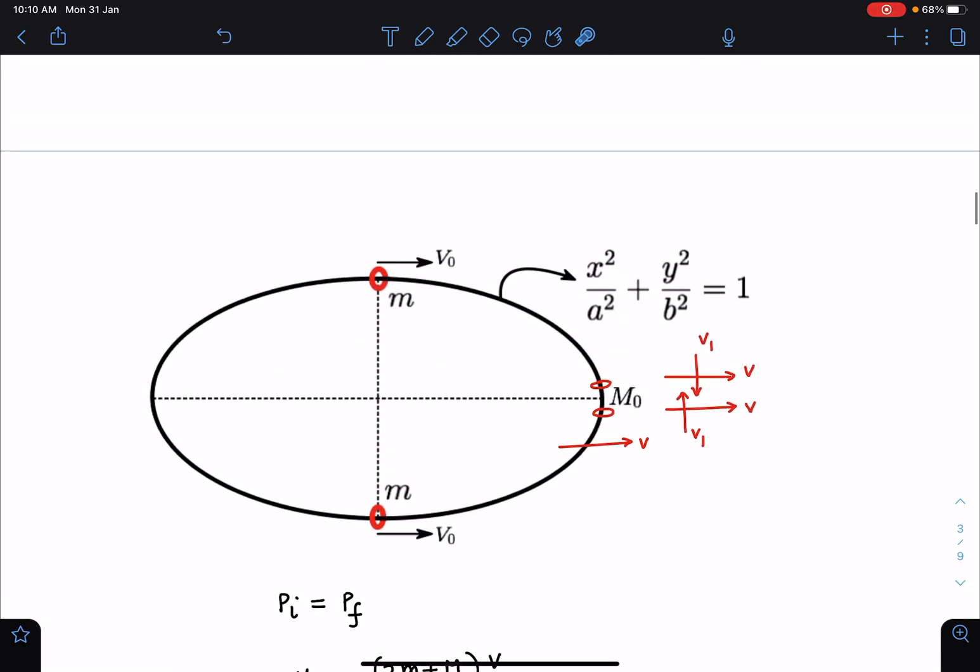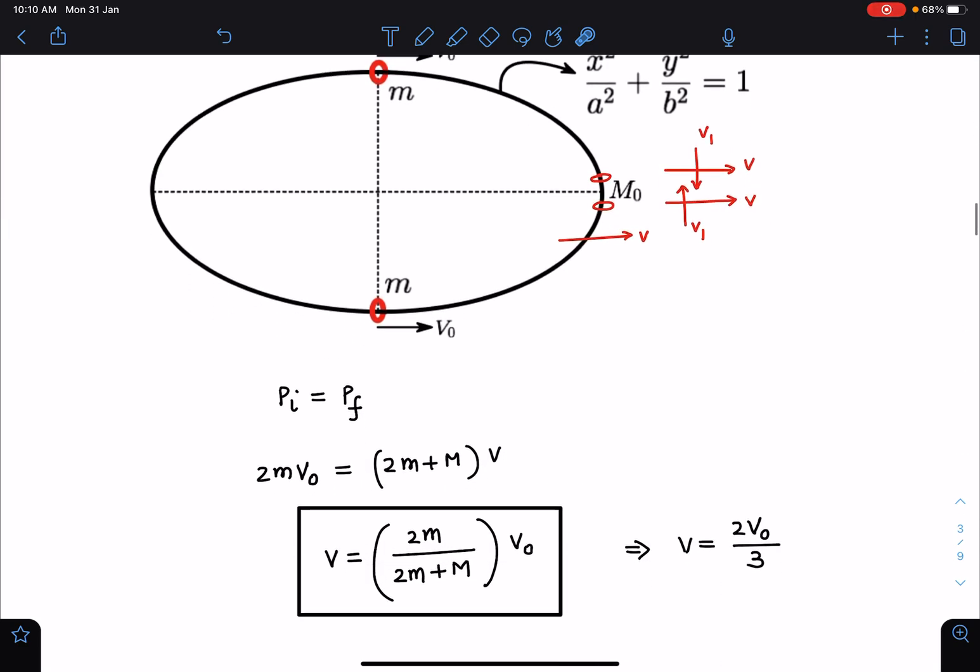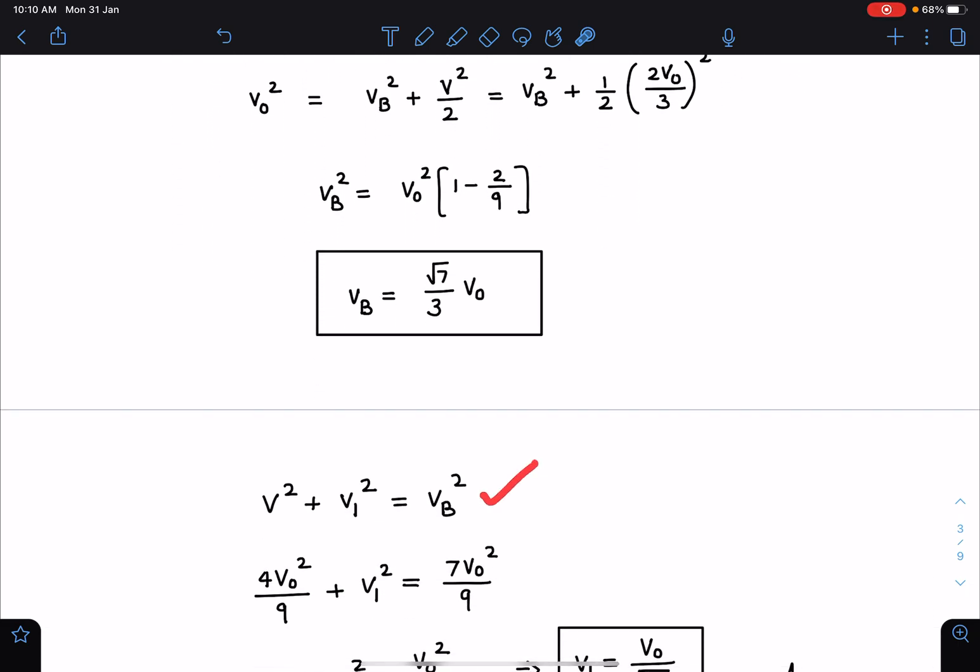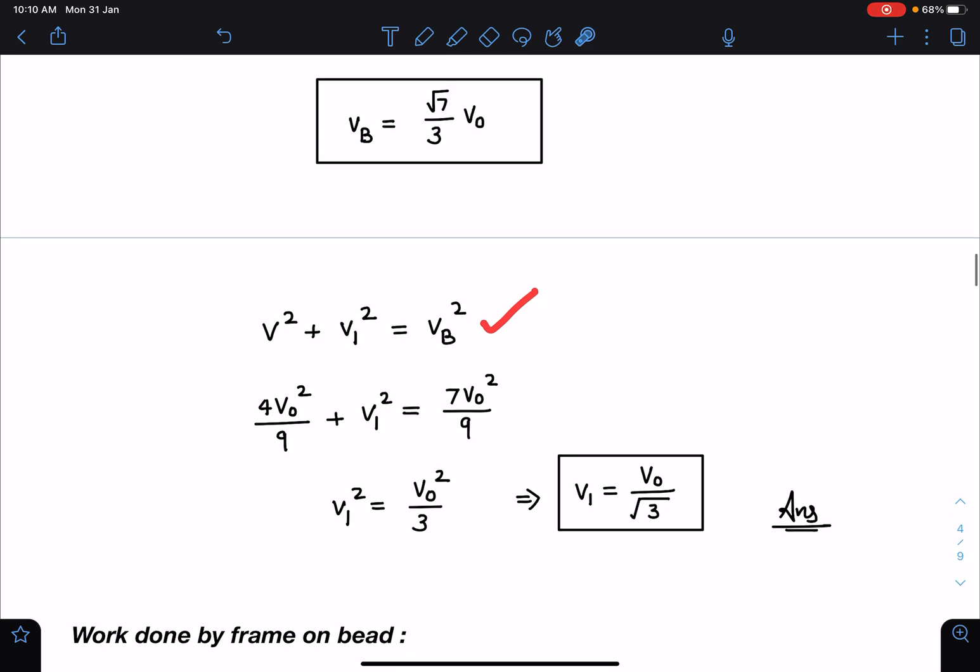From here I can calculate the individual component values also. The horizontal component is known to us, let's calculate the vertical component. So vb square is v square plus v1 square. If I use this and substitute the value of v which is 2 v0 by 3, I am going to get v1 as v0 by root 3.